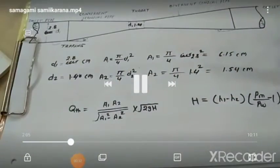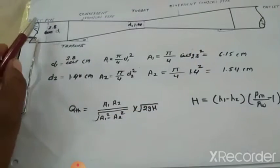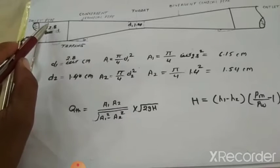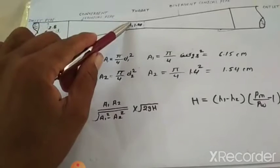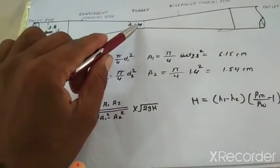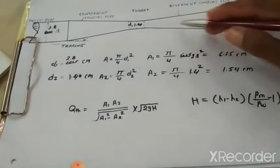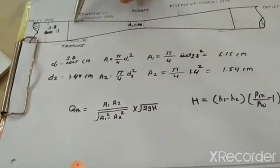So this is the figure of venturimeter. This is the cut section of venturimeter. Here inlet pipe is there. From inlet pipe water enters. The diameter of the inlet pipe is 2.8 and in the middle there is a throat whose diameter is 1.4. This part is the divergent conical pipe and this is the convergent conical pipe.